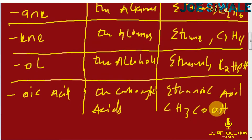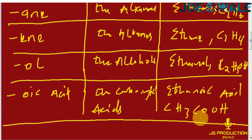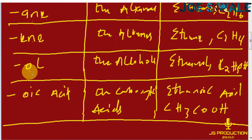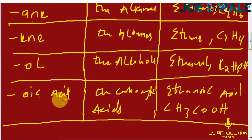So to summarize: if the name ends with -ANE, it belongs to the alkanes; if it ends with -ENE, it belongs to the alkenes; if it ends with -OL, it belongs to the alcohols; and if it ends with -OIC acid, it belongs to the carboxylic acids.